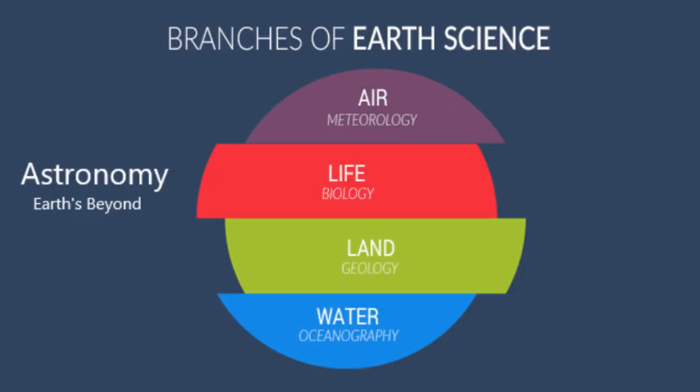Studying our planet is such a vast topic because of all the branches of earth science. Earth science involves how the natural world interacts with its surroundings. Because in order to define earth science and its interconnectedness, we need a complete list of earth science branches that encapsulates the topic in full. Now let's start.